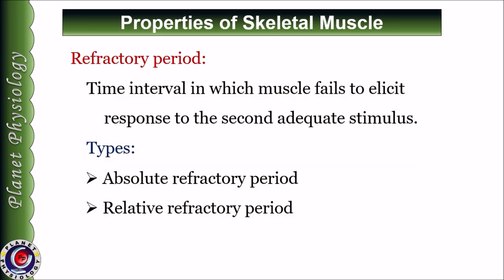Coming to the important property of the muscle called the refractory period. It is defined as the time interval in which a muscle fails to elicit response to a second adequate stimulus — meaning if the muscle is stimulated immediately after the first stimulus, it will not respond. Depending upon the strength of the second stimulus, we can divide refractory period into two: absolute and relative. In absolute refractory period, whatever is the strength of the second stimulus, it will not elicit response. Whereas in relative refractory period, a stronger second stimulus can elicit response from the muscle.